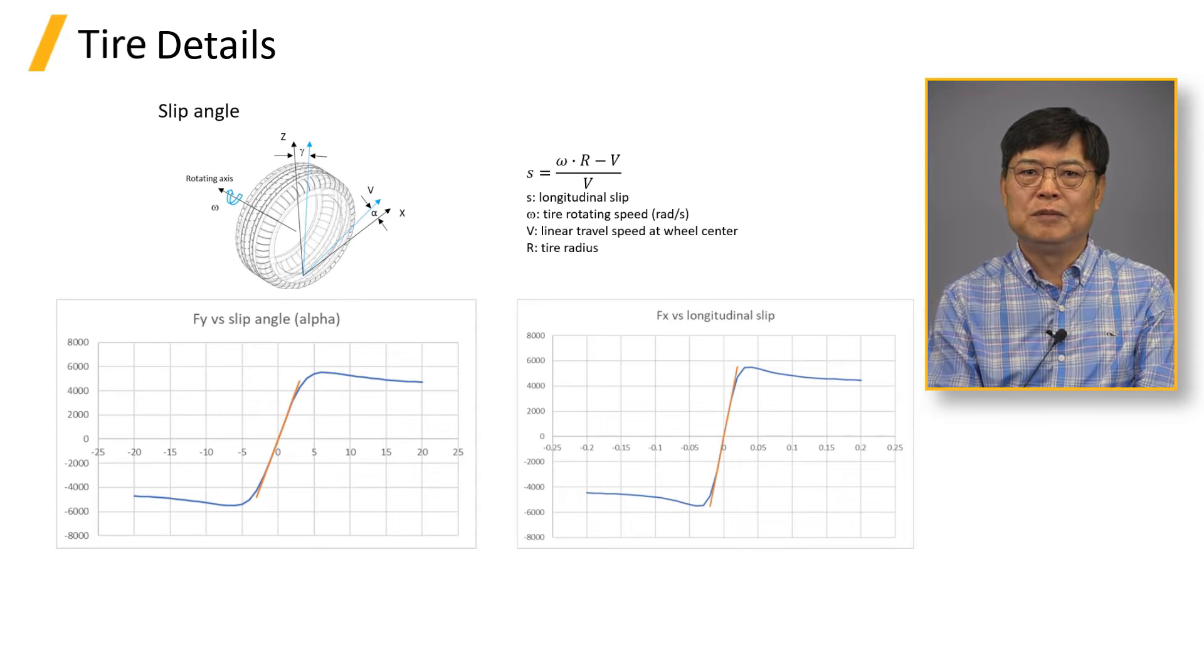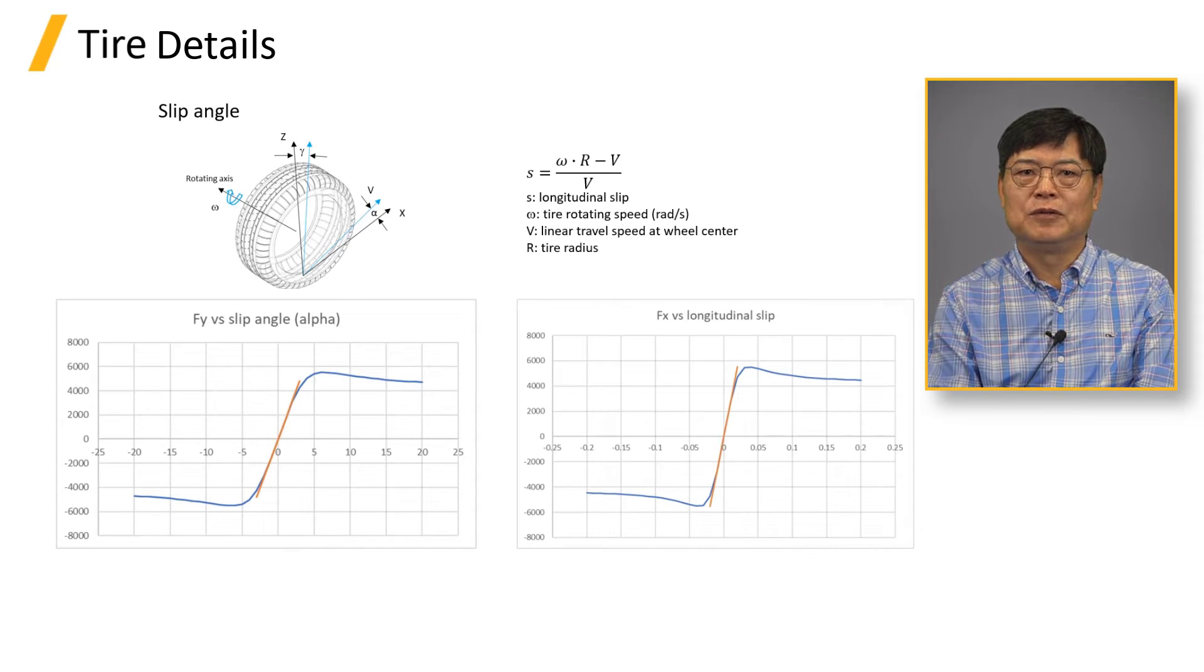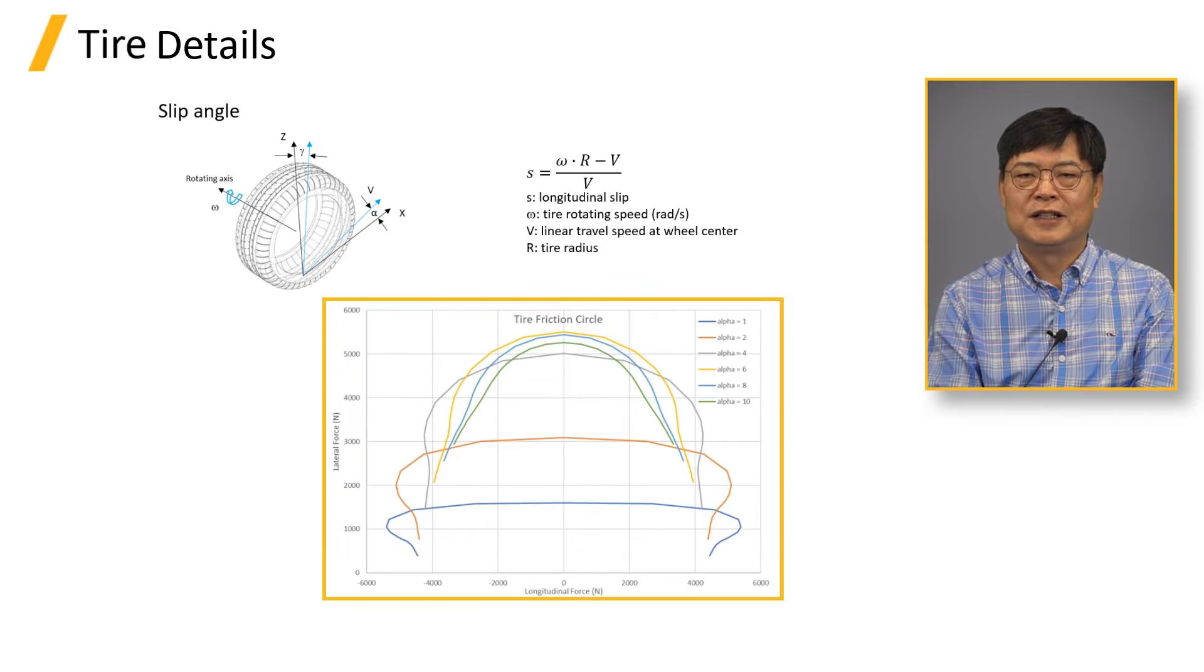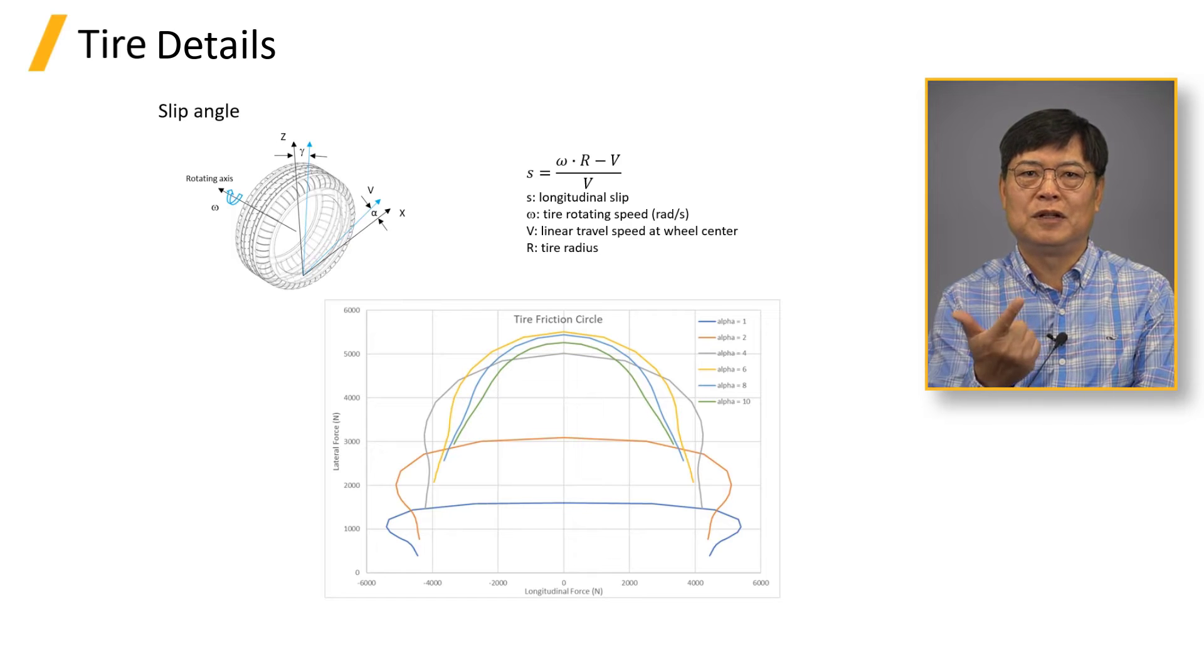In the case of extreme cornering and braking happening together, tire cannot produce the forces independently in the first two plots. Combined slip cases are represented by tire friction circle in the third plot. This is only represented by premium tire models such as MF-Tyre and F-Tyre.